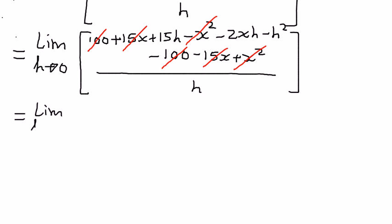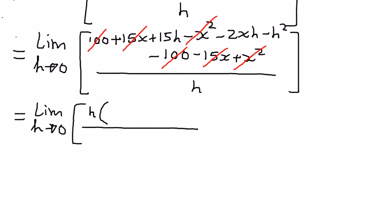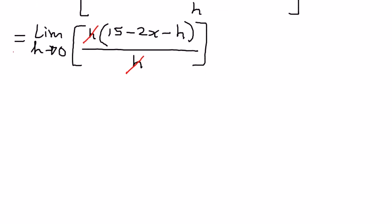Simplifying further, limit as h approaches 0, we are left with 15h minus 2xh minus h squared. Since h is common in all three terms, I pull out h as a common factor. So we have h times (15 minus 2x minus h) in the numerator and h in the denominator. The h in the numerator and the h in the denominator cancel out.